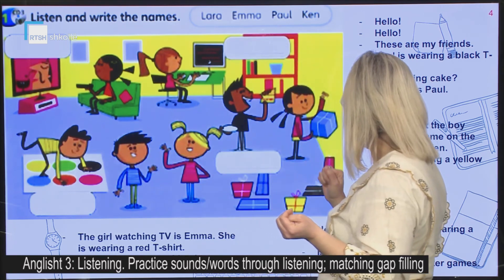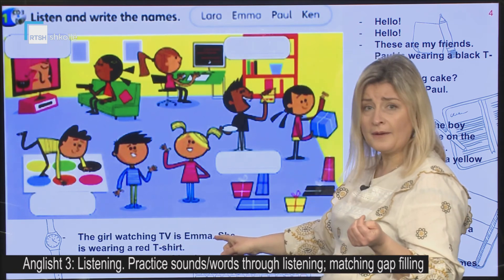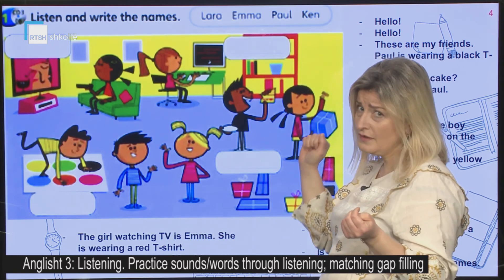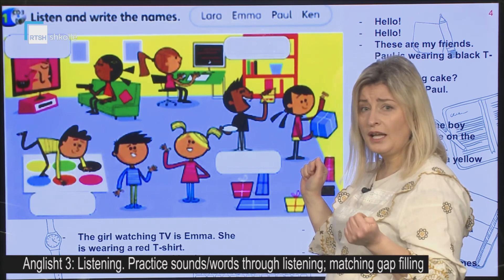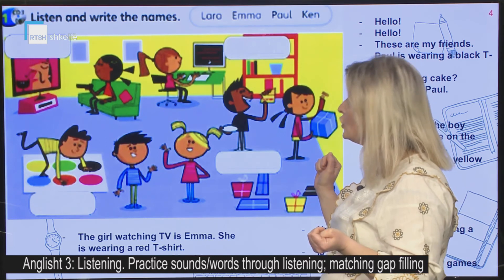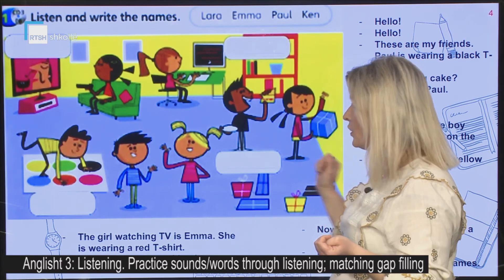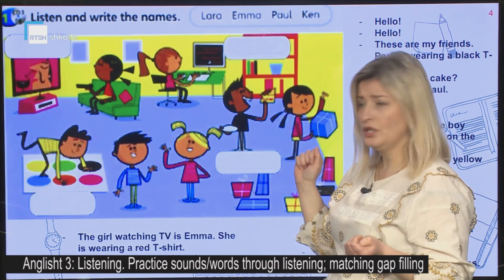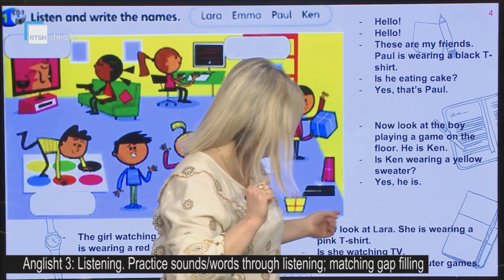Pashtoj. The girl watching TV is Emma. Vajza që po shikon televizor është Emma. She is wearing a red t-shirt. Ajo ka veshur një bluzë me mëngë të shkurtra të kuqe. Oh yes, Emma's my friend too. Po, Emma është shoqja ime gjithashtu.